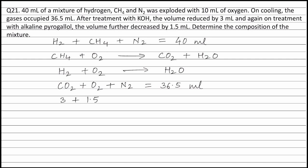Putting the values, we get volume of carbon dioxide that is 3 ml plus volume of Oxygen that is 1.5 ml plus volume of Nitrogen equal to 36.5 ml. From this, we get volume of Nitrogen equals 32 ml.